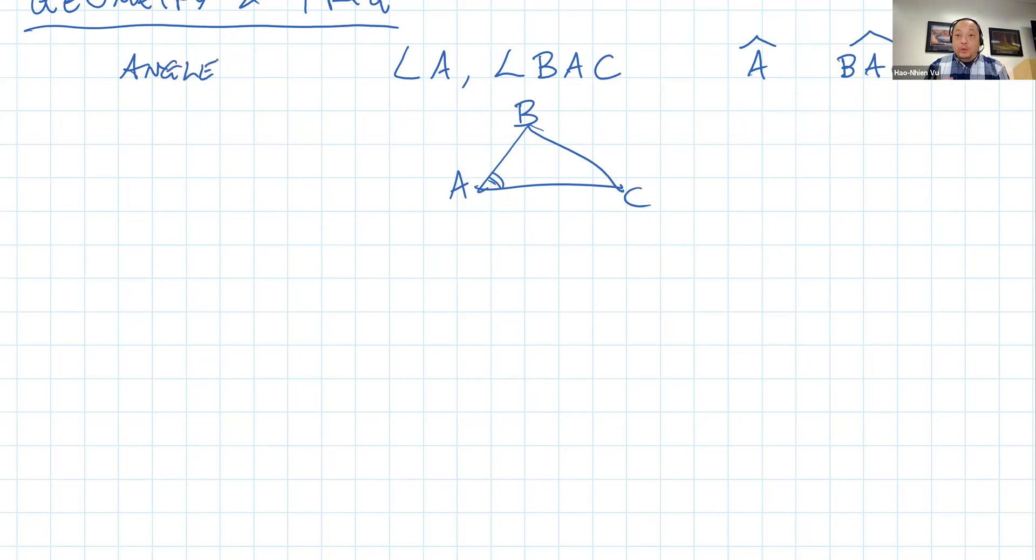And in the US, we make a distinction between the angle as a geometric structure or geometric figure versus the measure of it, which is a number. So if angle A here has a measure of looks like about 50 degrees, then in the US we'd say measure of angle A equals 50°. Whereas in Vietnam, they just say the angle A is 50°.